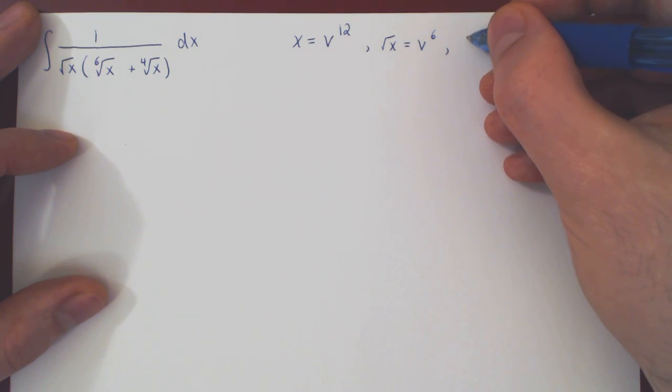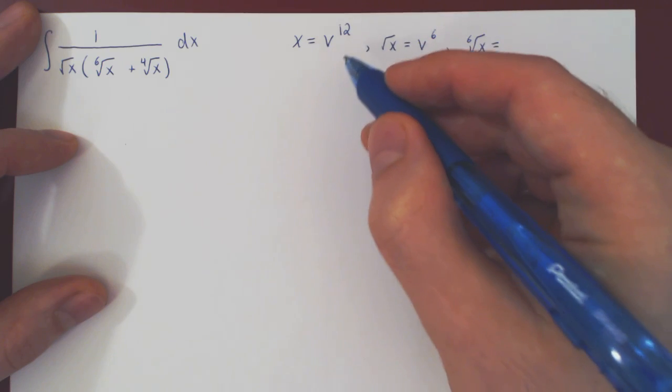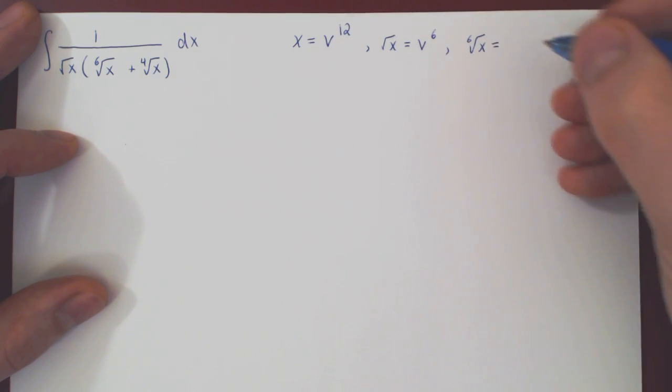The sixth root of x is the power of 1 over 6. 12 over 6 is 2.